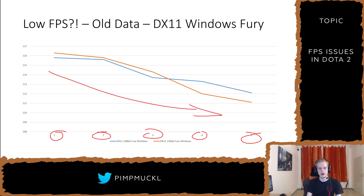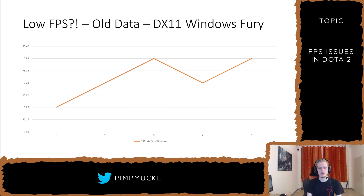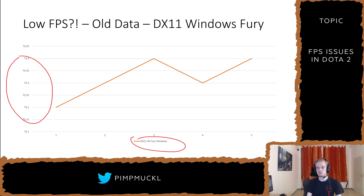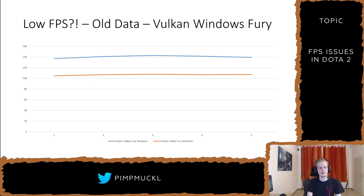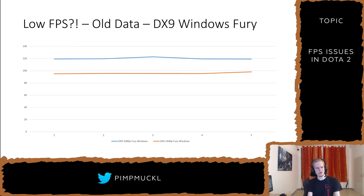Significantly. I actually did the math on this — it is significantly less FPS. And I went into my 4K benchmarks and they were fine, perfectly fine. 75, 75 FPS, no problem at all. And I went to the Vulkan ones — looks great. There is no drop at all.